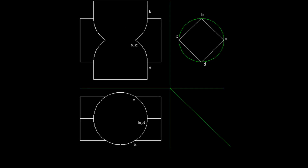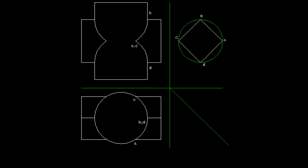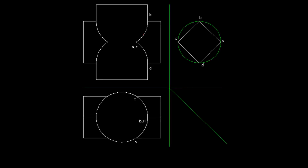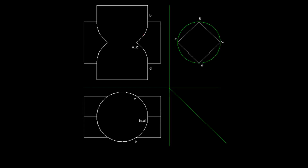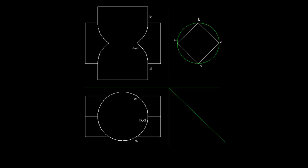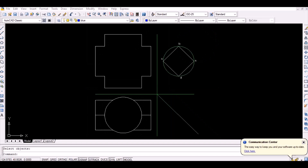Initially draw the top view, front view, and side view of the objects in any angle of projection. Then mark the vertices of the square prism in the side view from A to D as shown.